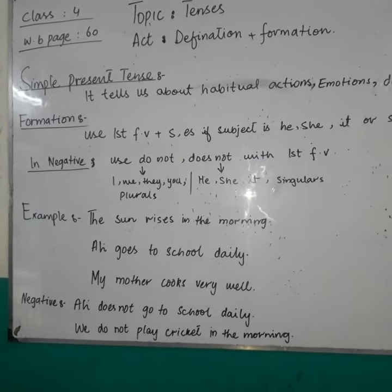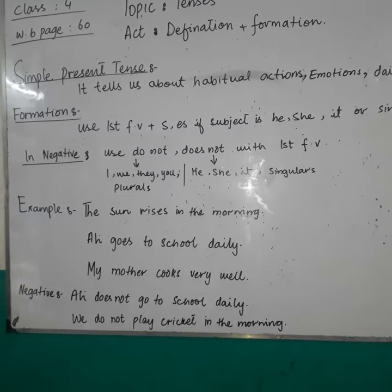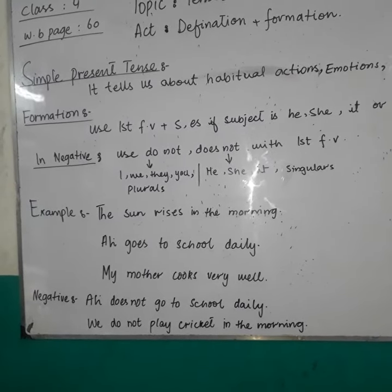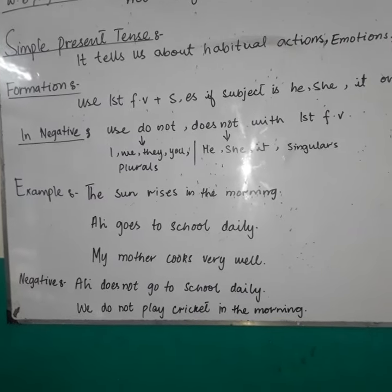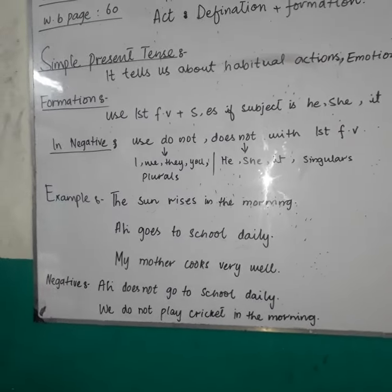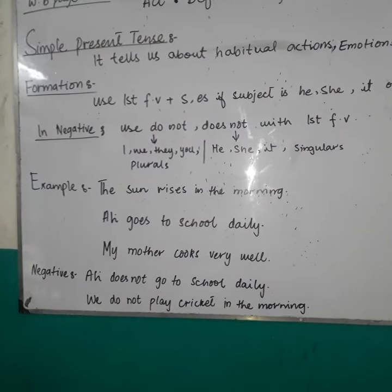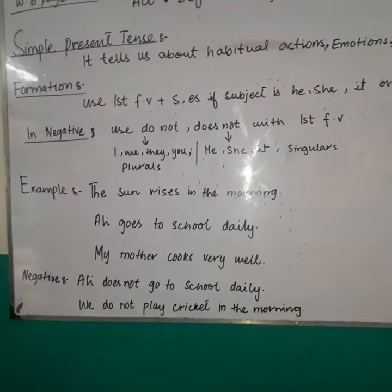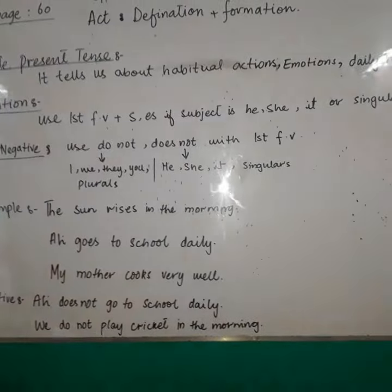In negative, we use do not and does not with the first form of verb. We use do not when the subject is I, we, they, or you — plural. Do not کب use کرتے ہیں؟ جب آپ کے پاس subject I، we، they، یا you ہو۔